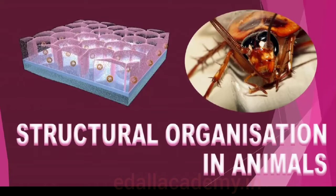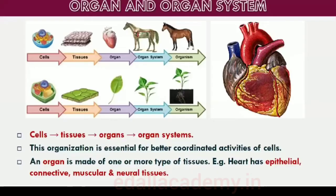In the preceding chapters you came across a large variety of organisms, both unicellular and multicellular, of the animal kingdom. In unicellular organisms, all functions like digestion, respiration and reproduction are performed by a single cell. In the complex body of multicellular animals, the same basic functions are carried out by different groups of cells in a well-organized manner.